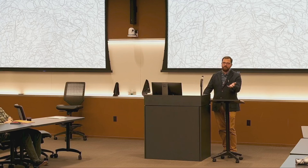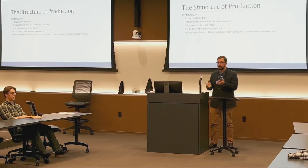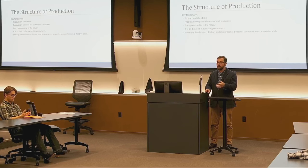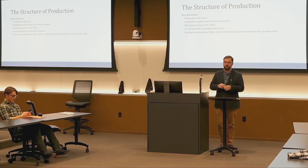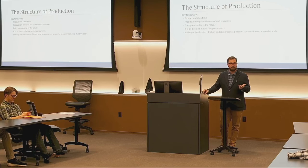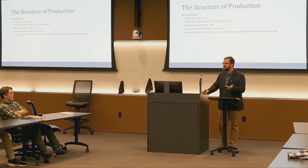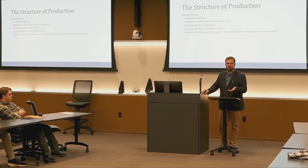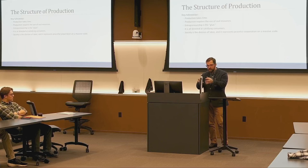The key takeaways are: production is very complex; it takes time — we can't just go immediately from a chicken farm to a ham sandwich, these stages take time and are in sequence; production requires the use of real resources — land, labor, and capital goods including tools, machines, and intermediate products. But there's one exception: the consumer good, the ham sandwich itself. That's not a capital good — that's something we consume for our direct enjoyment, and that's what all of it was directed towards.